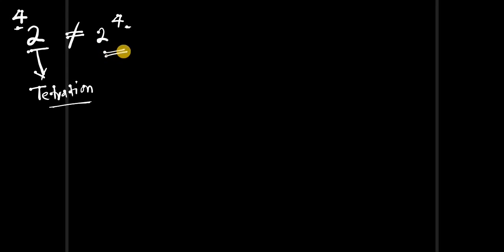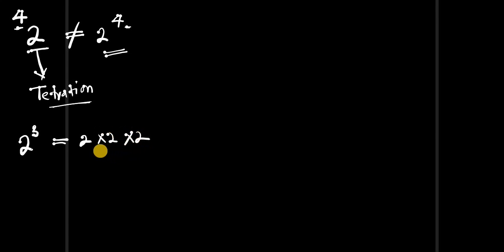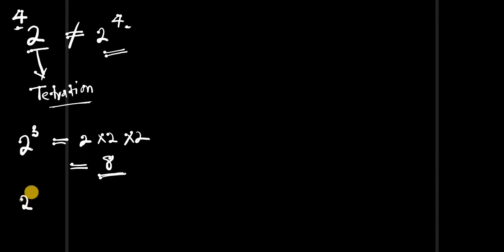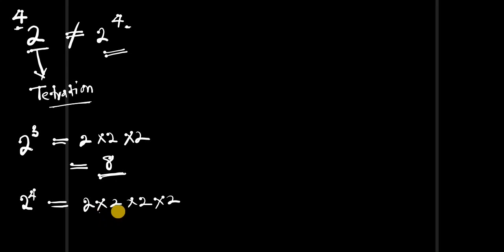Let's start with what we are used to. If you have 2 to the power of 3, this is simply equal to 2 times 2 times 2 — that is 2 in 3 places — which gives us 2 times 2 is 4, and 4 times 2 is 8. Now if you have 2 to the power of 4, it simply equals 2 times 2 times 2 times 2 — that is 2 in 4 places.